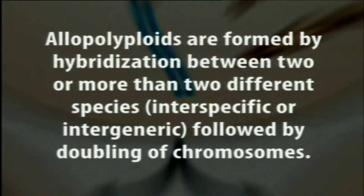Allopolyploids are formed by hybridization between two or more different species — interspecific or intergeneric crosses can be used. When we cross two different diploid species, the hybrid produced is always sterile in nature, so chromosome doubling must follow for the allopolyploid to survive. Without chromosome doubling, the chromosomes from two different genomes cannot pair with each other, and the hybrid will not survive due to irregular meiosis.